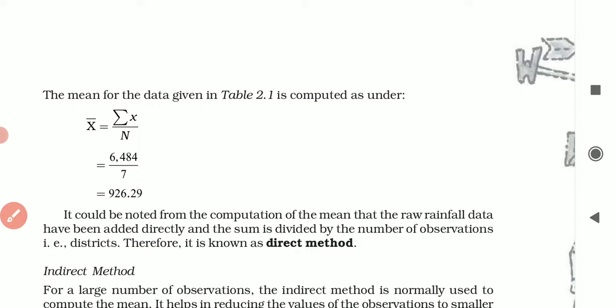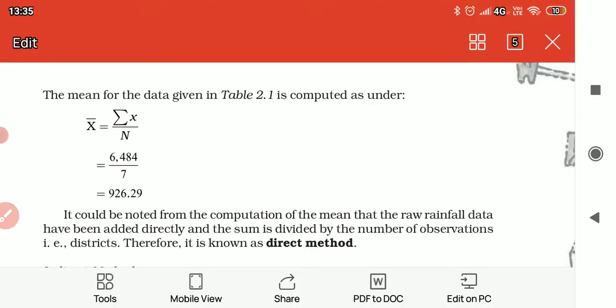It could be noted from the computation of the mean that the rainfall data have been added directly and the sum is divided by the number of observations, the districts. Therefore it is called the direct method. We have got the mean data from the direct method after applying on the ungrouped data, because these intervals were not available.